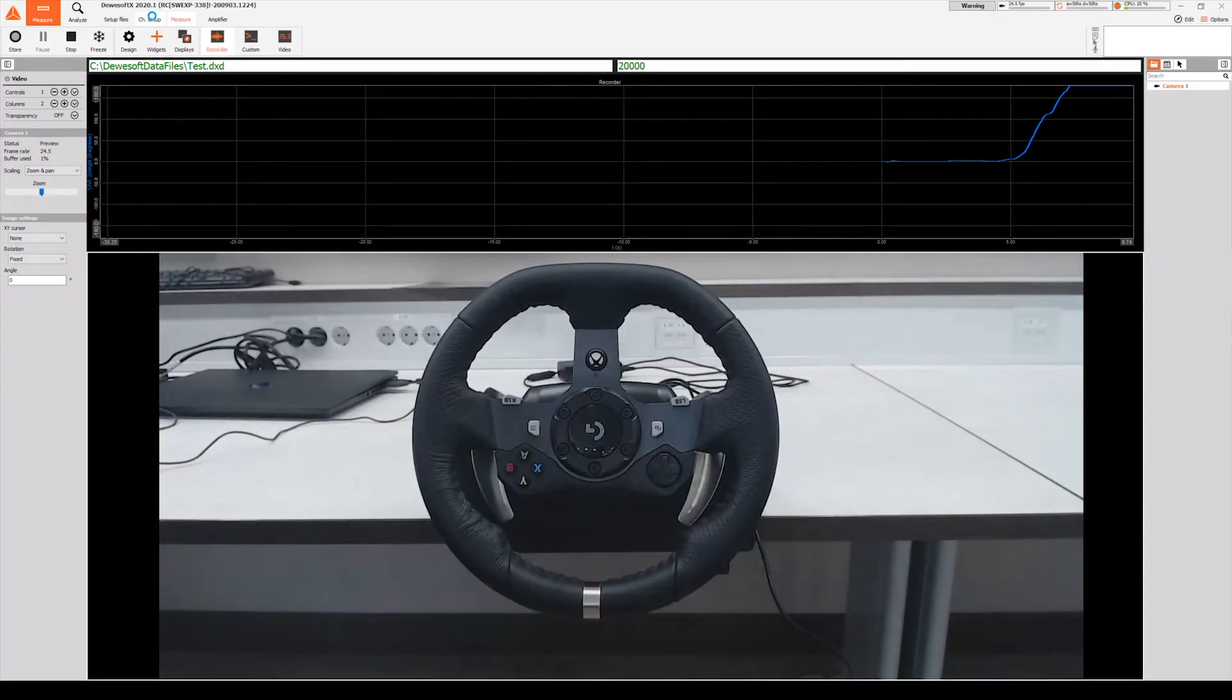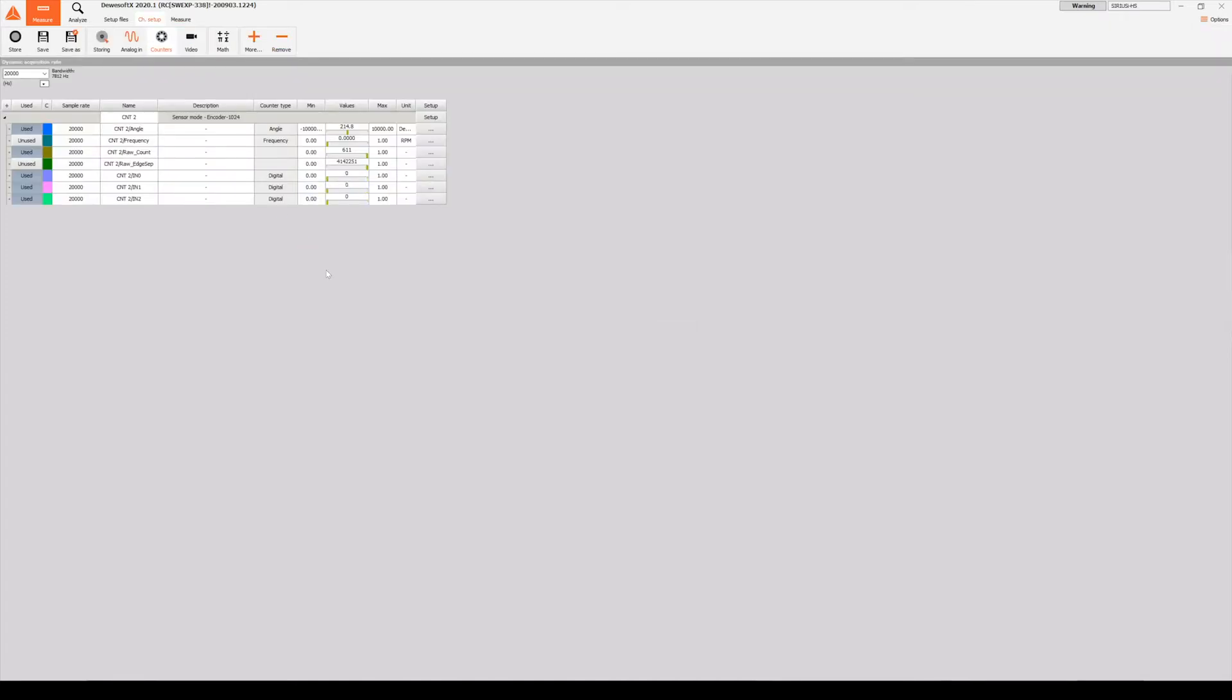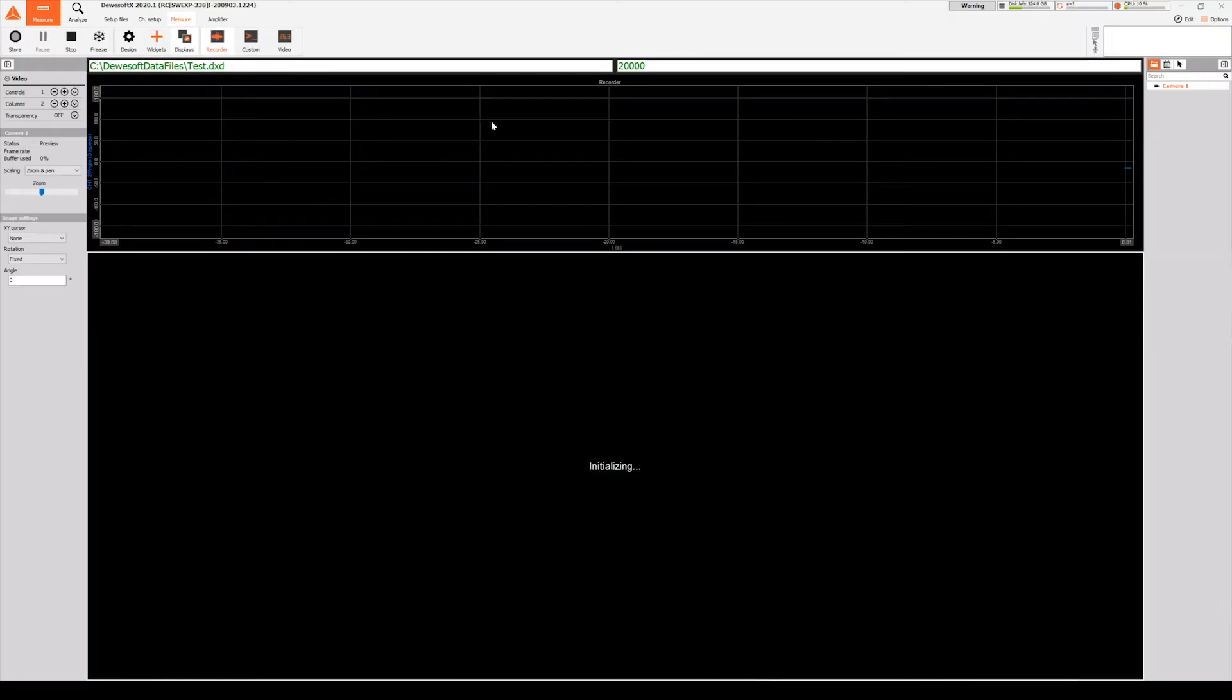Let's take an angle sensor in a steering wheel, for example. We see that if we start the measurement, the current measured angle never starts at zero degrees, but at the position it actually is.